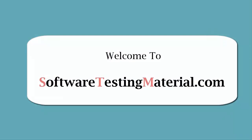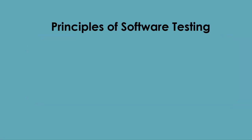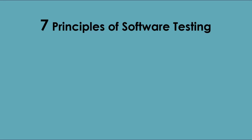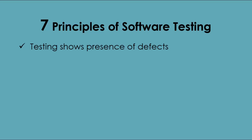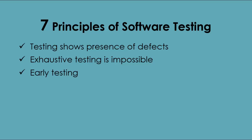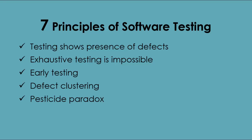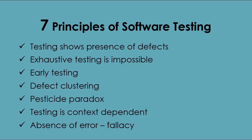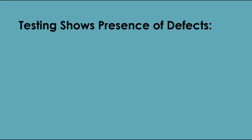Hi friends, this is Suma from SoftwareTestingMaterial.com. In this video we are going to see the principles of software testing. There are seven principles of software testing: first, testing shows presence of defects; exhaustive testing is impossible; early testing; defect clustering; pesticide paradox; testing is context dependent; and absence of error fallacy. Let's see each principle in detail.